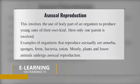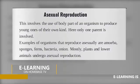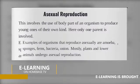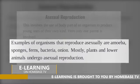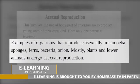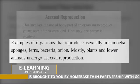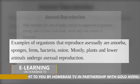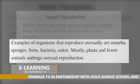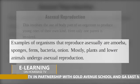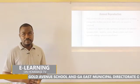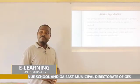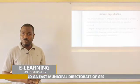Examples of organisms that undergo asexual reproduction include: amoeba, sponges, ferns, bacteria, and onion. These are just a few; there are many more. Mostly plants and lower animals undergo asexual type of reproduction.